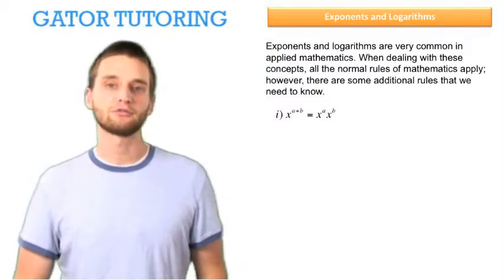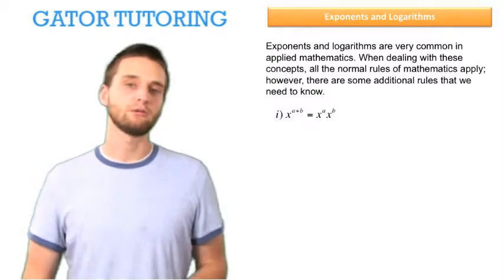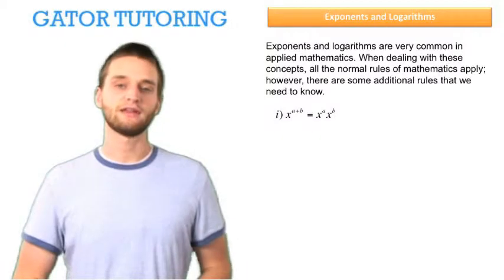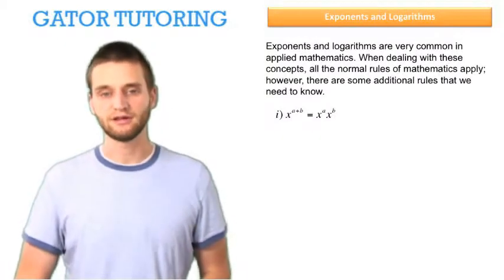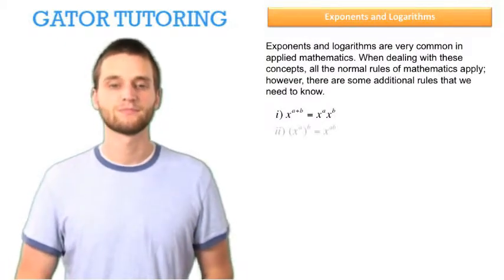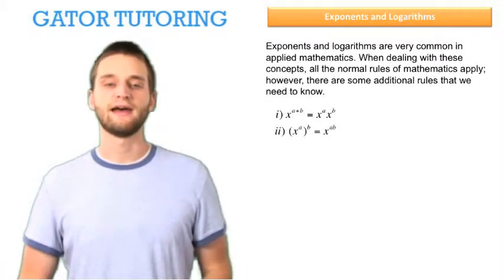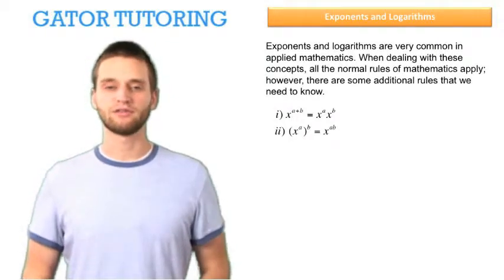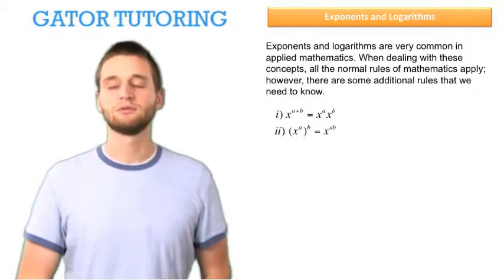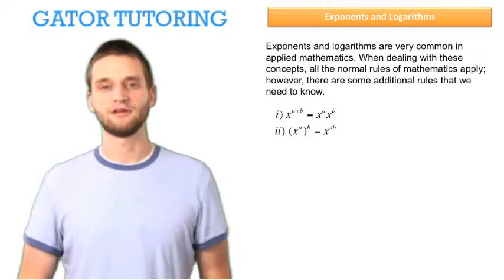One is x raised to the a plus b equals x raised to the a times x raised to the b. The second rule is x raised to the a, all raised to the b, equals x raised to the a times b.